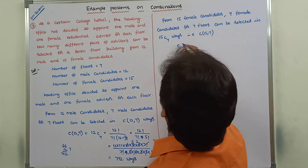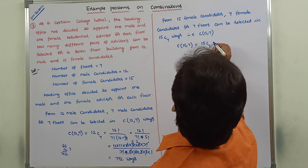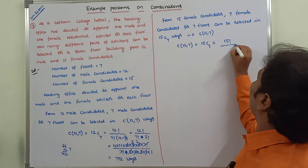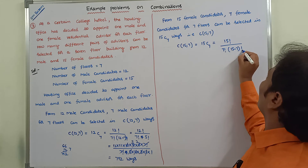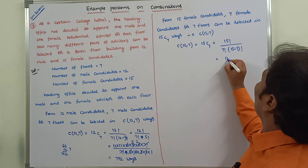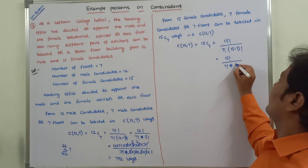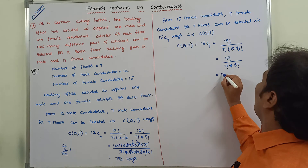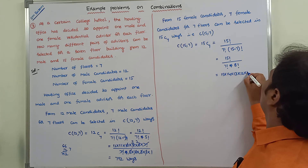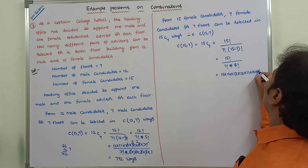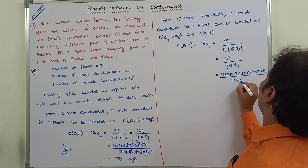C(15, 7) can be written as 15! divided by 7! into (15 − 7)!, which equals 15! divided by 7! into 8!. Expanding the numerator: 15 × 14 × 13 × 12 × 11 × 10 × 9 × 8! divided by 7! into 8!.